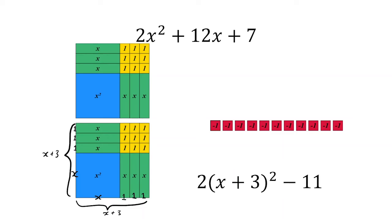And so the completed square form of 2x squared plus 12x plus 7 is two lots of x plus three squared minus eleven.